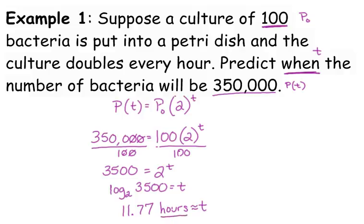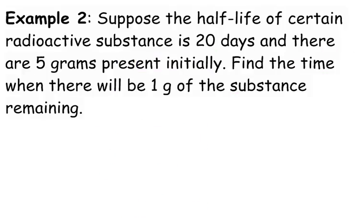Let's talk about a half-life problem. Suppose the half-life of a certain radioactive substance is 20 days and there are 5 grams present initially. Here's our half-life. We have 5 grams present initially—that's our initial population P₀. Find the time when there will be 1 gram of the substance remaining. That is our P(t). We don't know the time, but that is our population at a particular time.